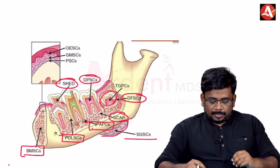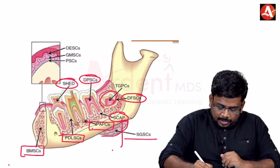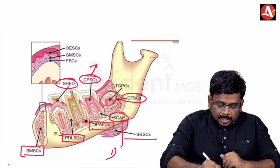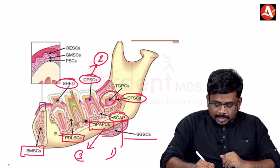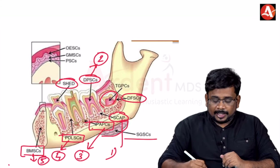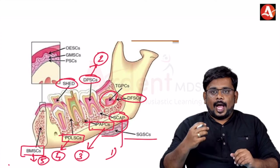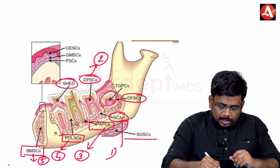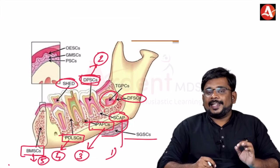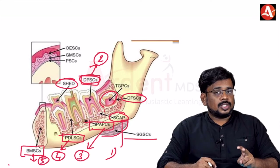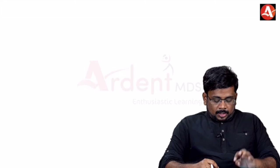Among all stem cells, those most useful in regenerative endodontics are: first, stem cells from the apical papilla (SCAP); second, dental pulp stem cells; third, inflamed periapical progenitor cells; and fourth, periodontal ligament stem cells. When asked which is the most easily harvested, the answer is dental pulp stem cells. This was a question asked at PGI Chandigarh consecutively in 2017 and 2018.